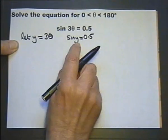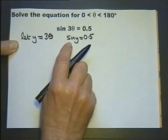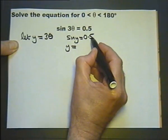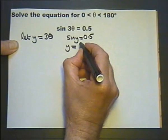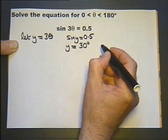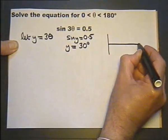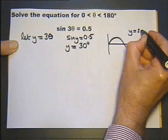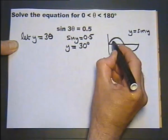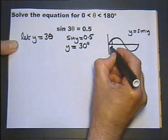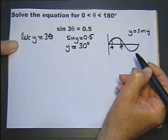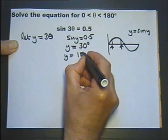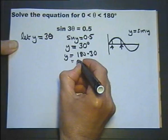To solve this equation we inverse sine both sides. The inverse sine of sine y is y, and without a calculator you should know that the inverse sine of 0.5 is 30 degrees — if not, you could use a calculator. Then either by the equation method or a quick sketch of the sine graph, there's 30 degrees, and therefore this angle here will have the same sine value. In other words, y can also be 180 minus 30, in other words 150 degrees.